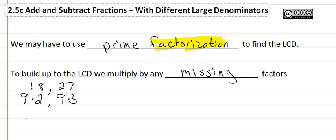And then just like we did when we did the prime factorization, I will take each unique factor, in this case 9 times 2 times 3, and I'll get that the LCD then is 54.